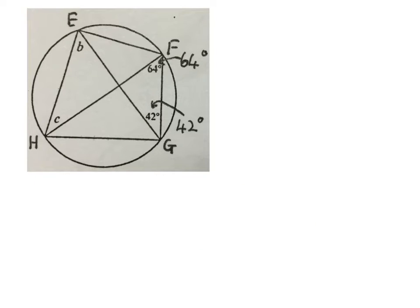This one is very much the same as the previous one. They gave us a full circle. Capital letters E, H, G and F lies on the circle circumference. Asking me to work out small B and small C gave me this is a 64 degrees and a 42 degrees.